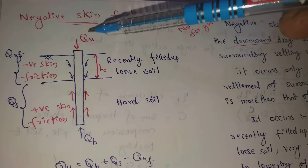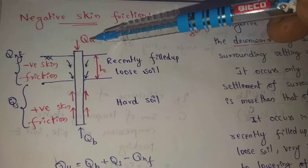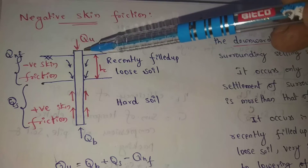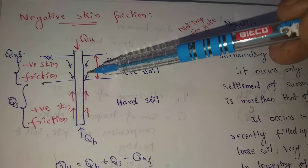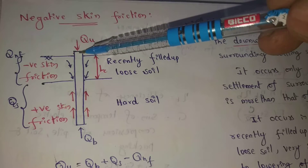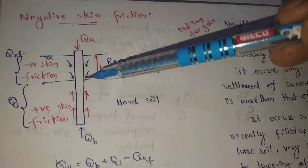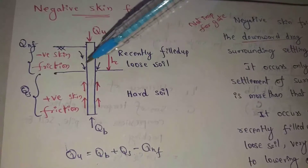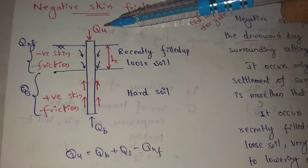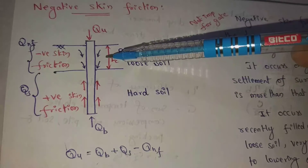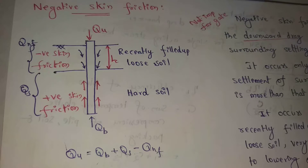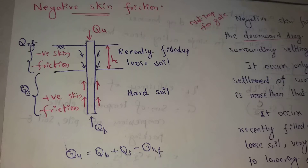Negative skin friction acts as follows: QU, the ultimate load, is applied to the pile. Positive skin friction acts in the opposite direction to the load. Same direction as the load is negative skin friction.